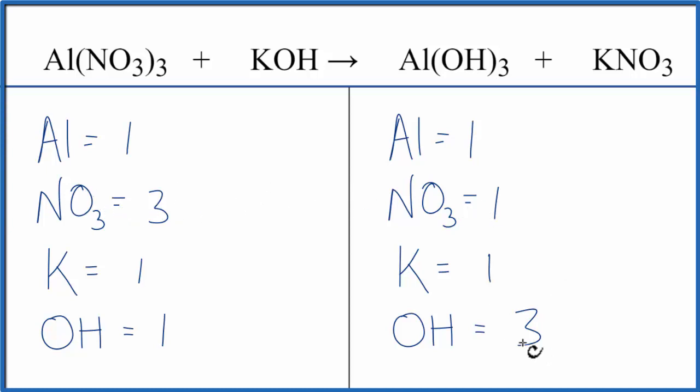It looks like the nitrates and the hydroxides aren't balanced. So we could just put a three in front of the KNO3. Then I have the nitrate, one times three. So those are balanced.